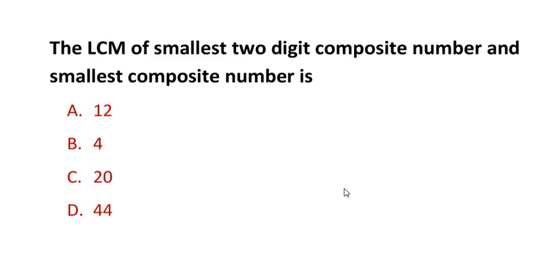Hello and welcome to my channel. In this video we are going to solve an example on real numbers. The question is: the lowest common multiple of smallest two-digit composite number and smallest composite number is.